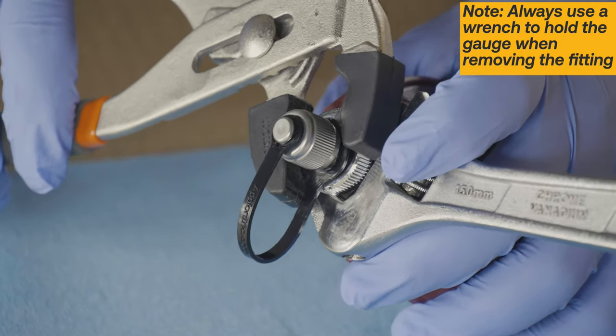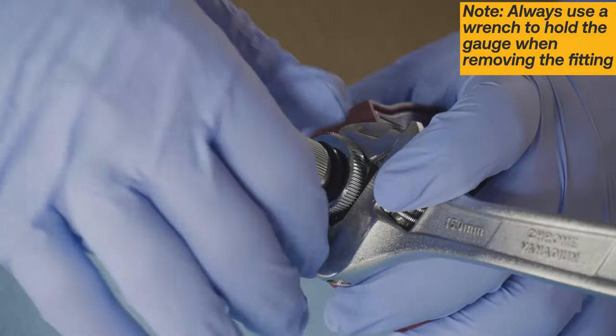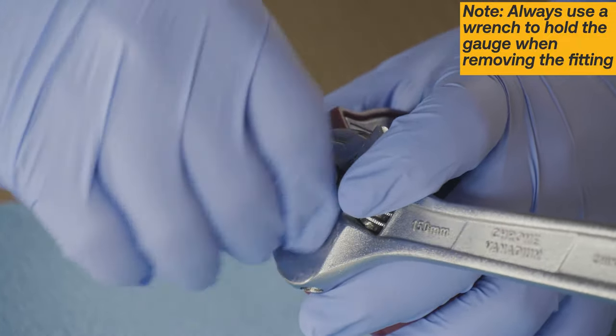Begin the cleaning by removing the knurled fitting with soft jaw pliers. Always use a wrench to hold the gauge when removing the fitting.